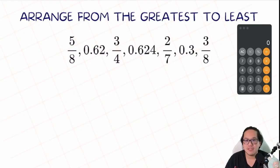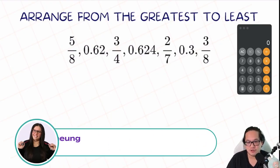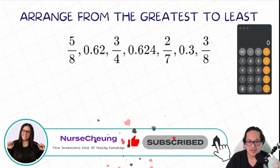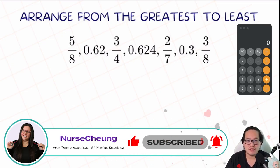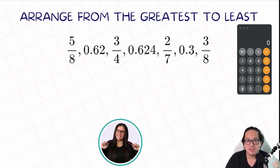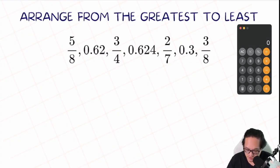When it comes down to these kinds of questions, either they're asking you to rearrange all the numbers from the least to the greatest or the greatest to the smallest, or they ask you which number is the biggest or the smallest. The easiest way to do this is to convert all of them to decimal.